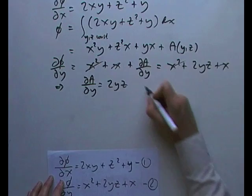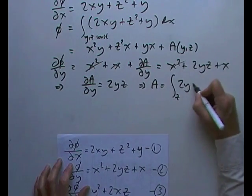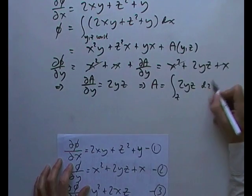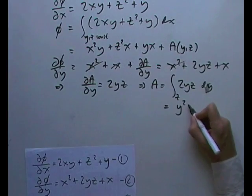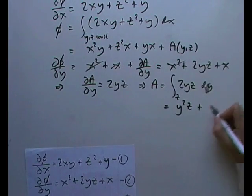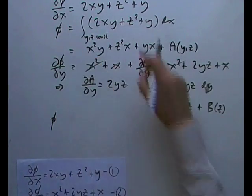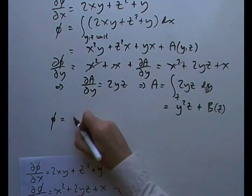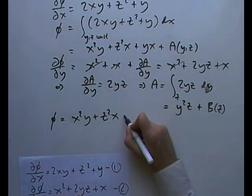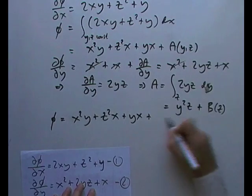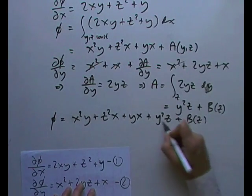And again, we can integrate that up. So a would be the integral, with z being constant, of 2yz dy. And the derivative of that is going to go back up to y squared z plus some constant, call that b of z. So we'll go back and write out the original function, this thing across here. So phi was x squared y plus z squared x plus yx plus y squared z plus some unknown function b of z.